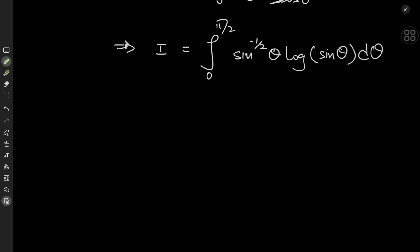Anyway, so we have this integral, and now I'm going to define an integral function I of some parameter s as the integral from 0 to pi by 2 of sine to the s of theta d theta.